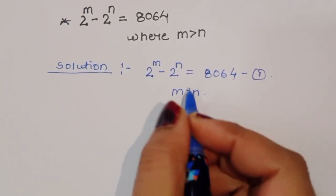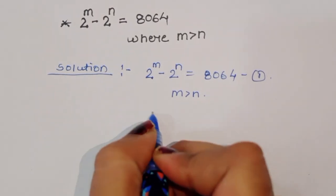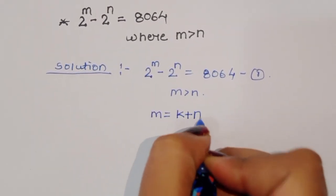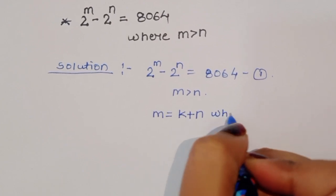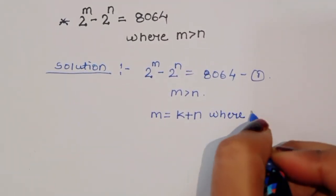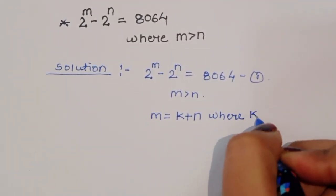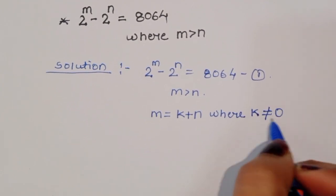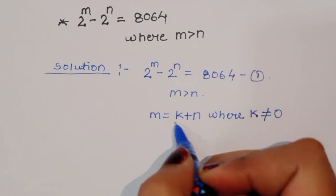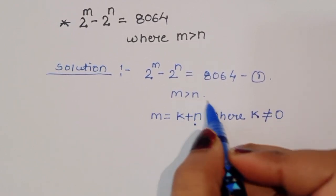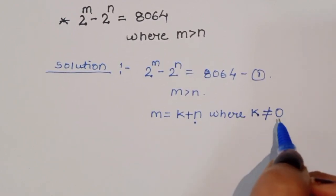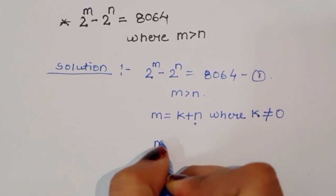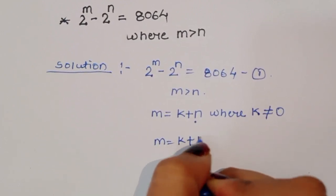Since m is greater than n, we can write m is equal to k plus n, where k is a constant and k is not equal to 0, because m is greater than n. So this is equation number 2: m is equal to k plus n.